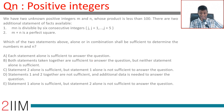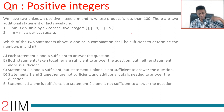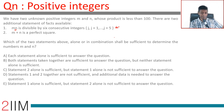We have two unknown positive integers m and n whose product is less than 100 — for example, 6×10 or 11×4, something like that. There are two additional statements of facts available: statement 1, m×n is divisible by six consecutive integers; statement 2, m+n is a perfect square. Which of the two statements above, alone or in combination, shall be sufficient to determine m and n?